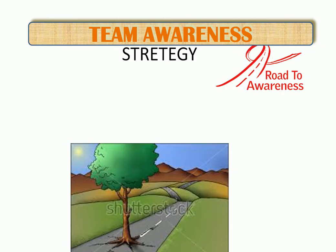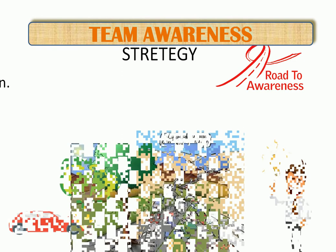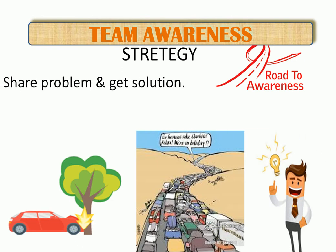Let's take an example or story based on the strategy. There is a tree grown on the road, and this is noticed due to vigilance. If our team member is vigilant, we come to know the problem — there is a tree on the road, and it is a problem because it can hit a car and cause jumps on the road.